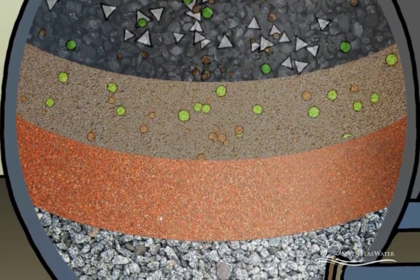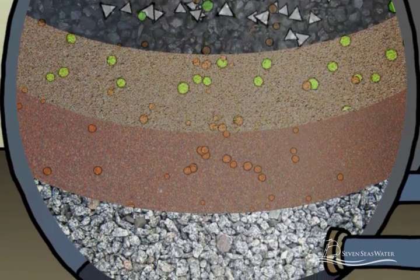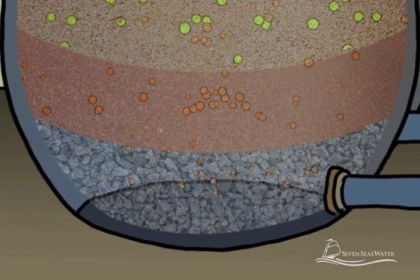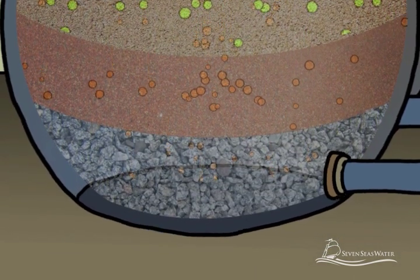In some cases, other types of membranes, known as ultrafiltration and microfiltration membranes, are used instead of multimedia filters to pretreat the seawater.